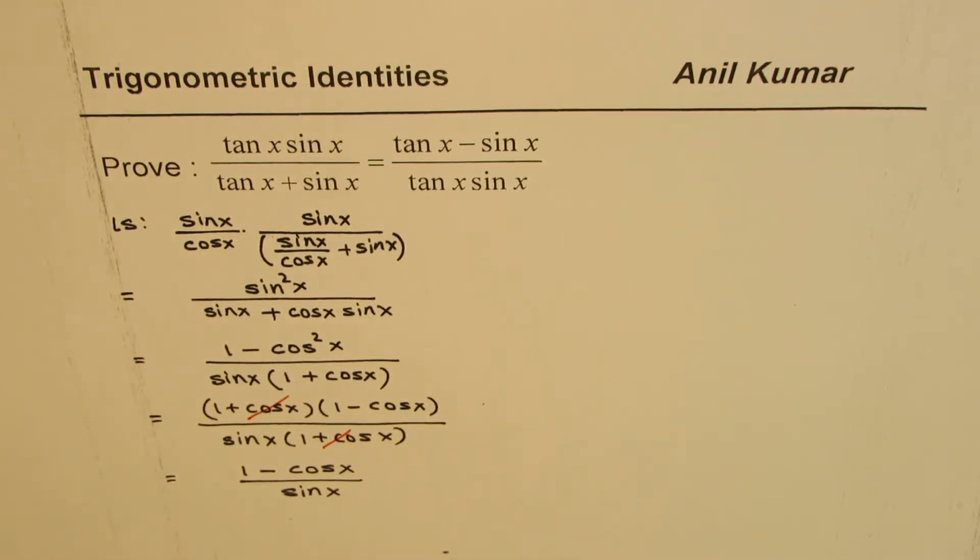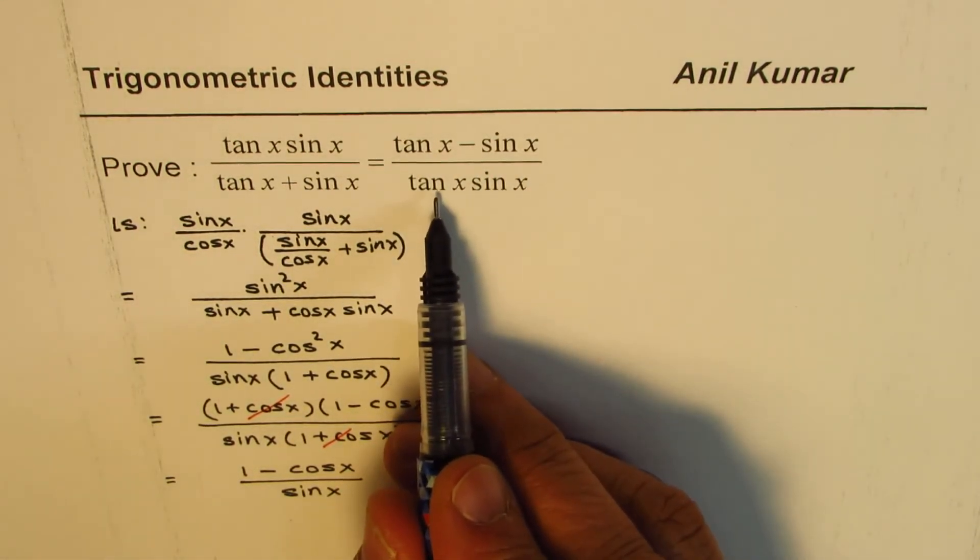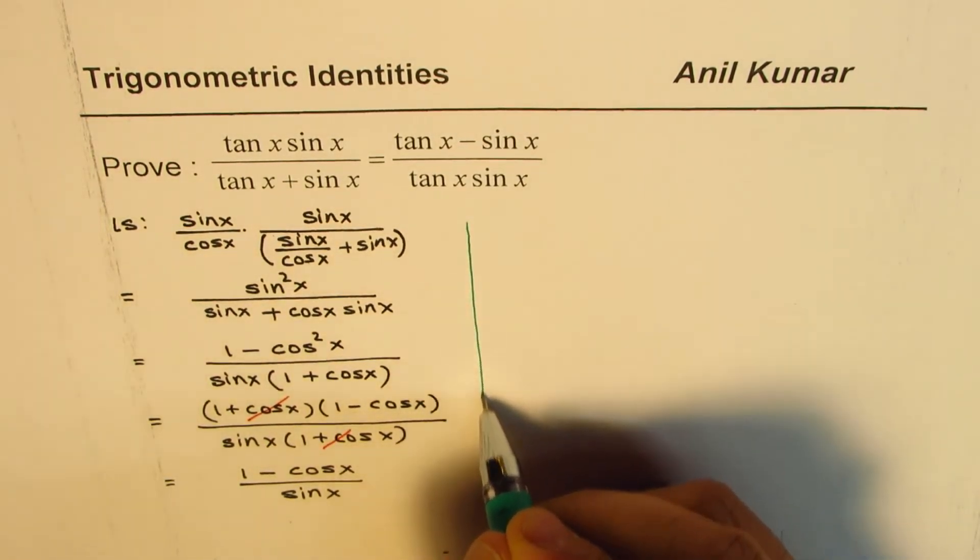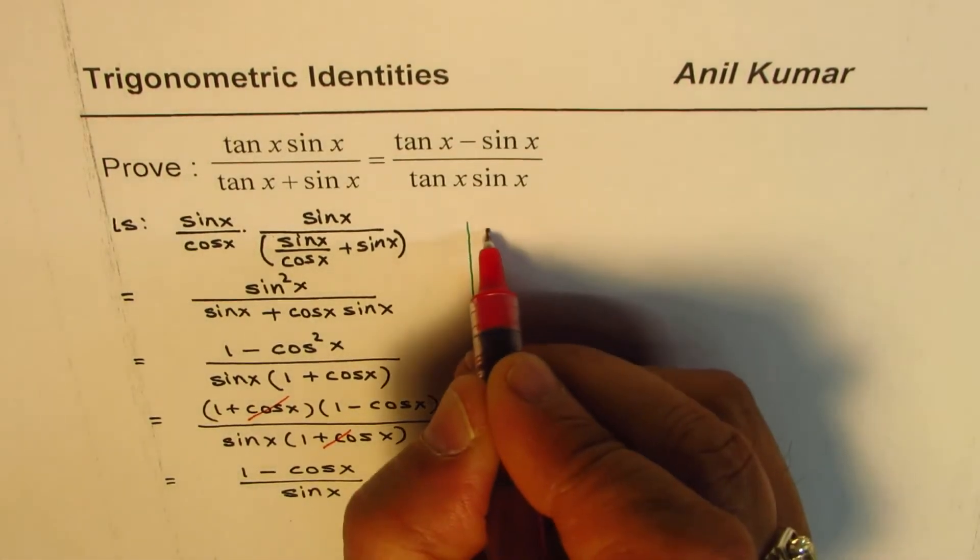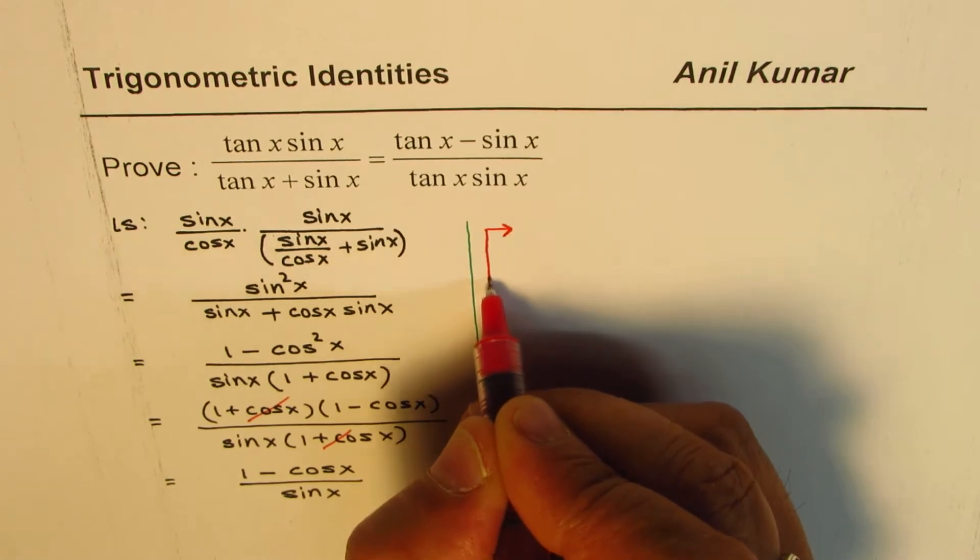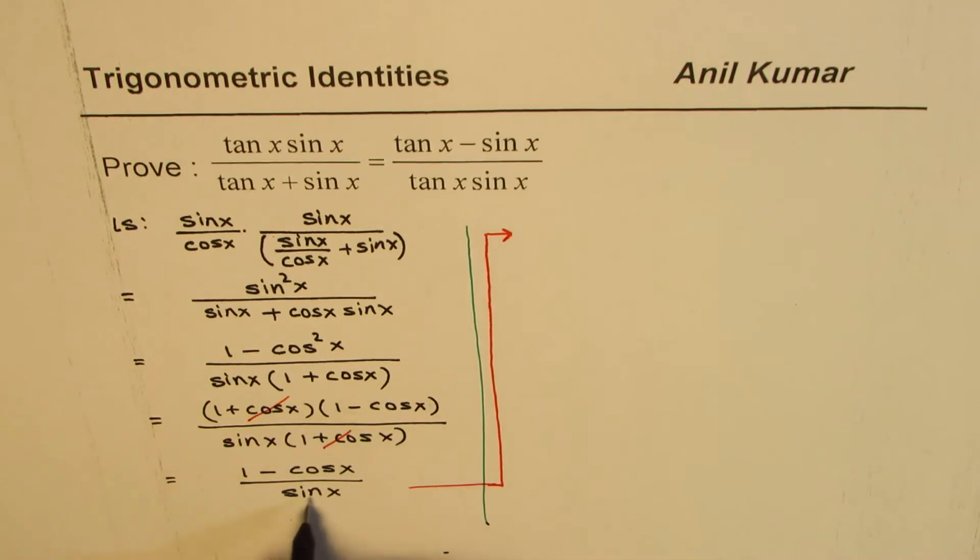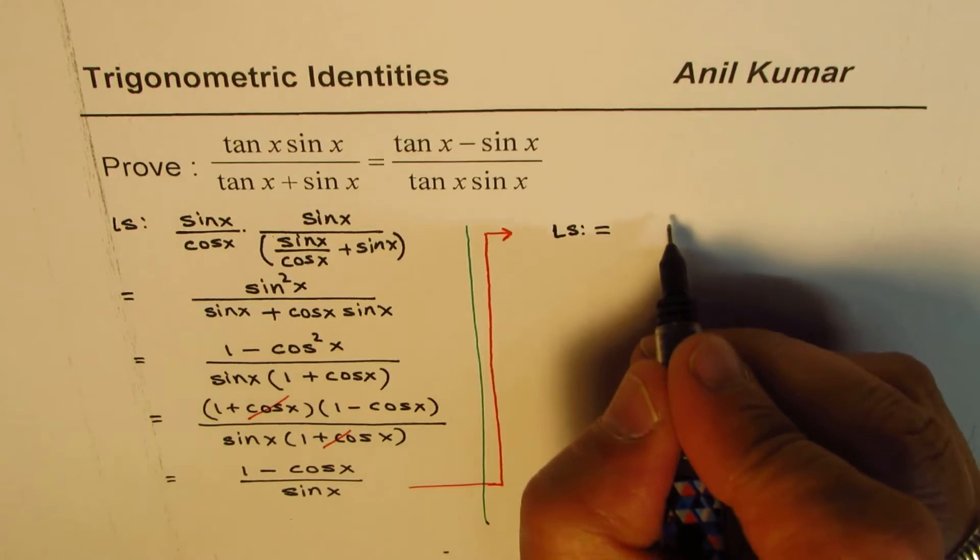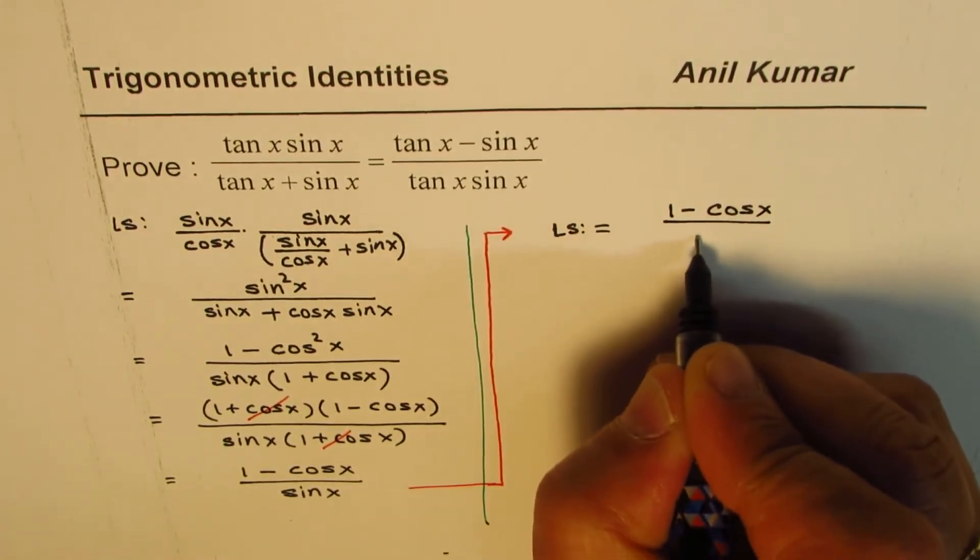What we get here is 1 minus cos x over sine x. That is the left side. Now to get tan x, what can we do? We need tan x in the denominator also. I'm continuing with my left side, I'm not going to the right side. From the left side directly I'll get my solution.